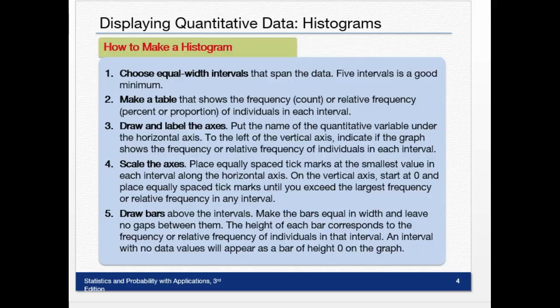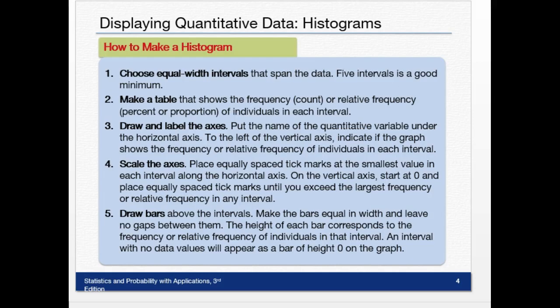So how do you do this? First of all, choose equal width intervals that span the data. Five intervals is a good minimum. So what that means, you're going to look for the minimum and the maximum in the values of your data. And you divide it up into at least five groups. You can do more than five. That's fine. But at least five is just generally a good rule of thumb.